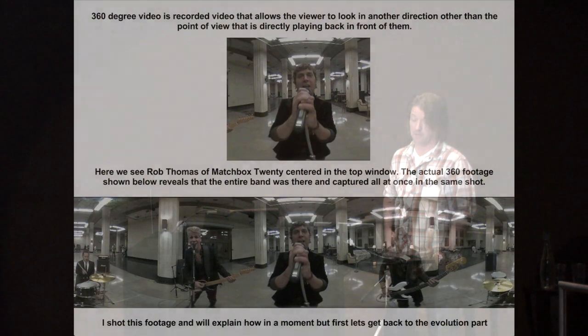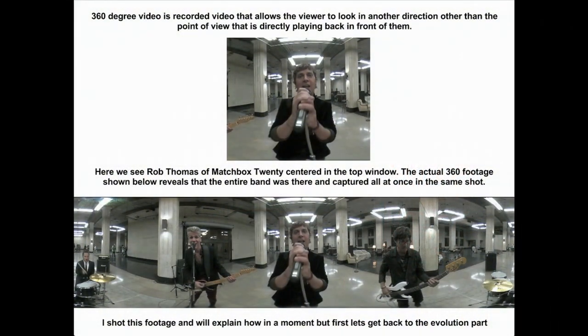What is 360-degree video? It's recorded video that allows the viewer to look in another direction other than the point of view that is directly playing back in front of them. Here we see Rob Thomas of Matchbox 20 centered in the top window. The actual 360 footage shown below reveals that the entire band was there, captured all at once in the same shot. I shot this footage, and we'll explain how in a moment — but first let's get back to the evolution.